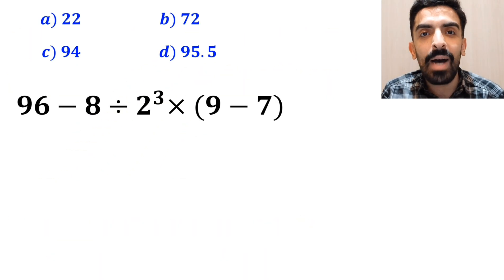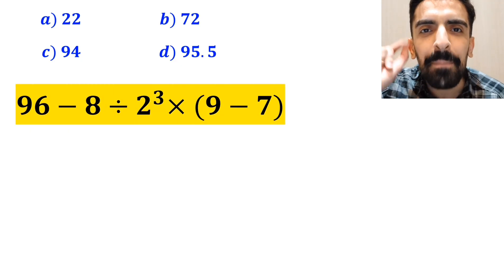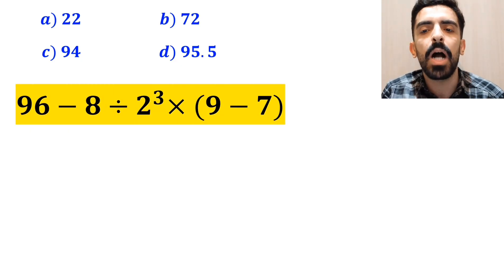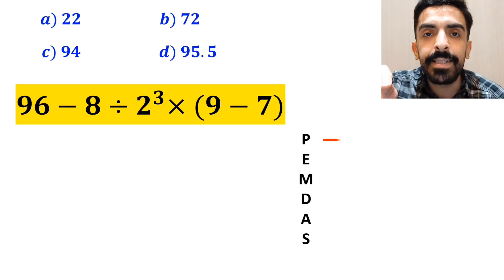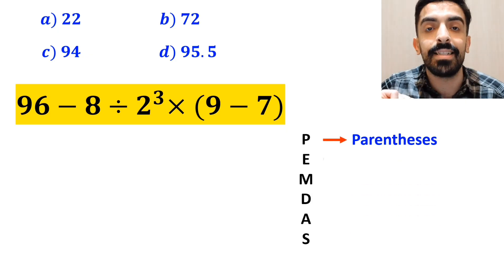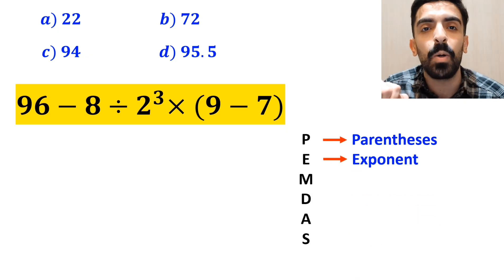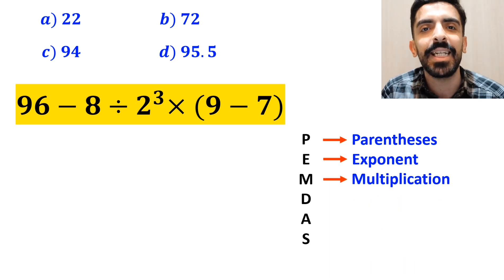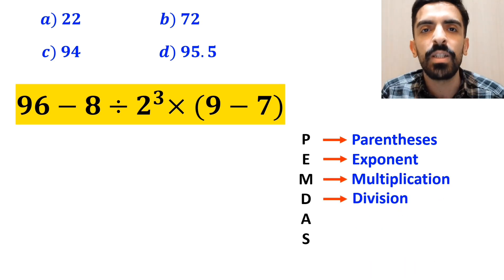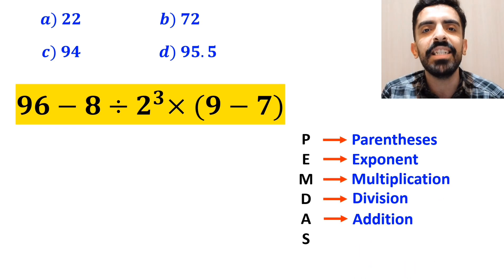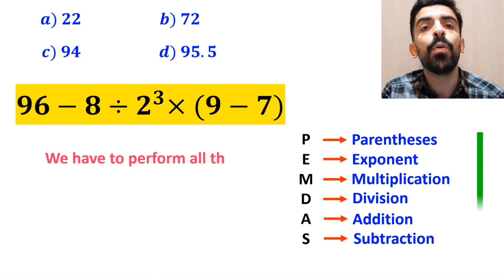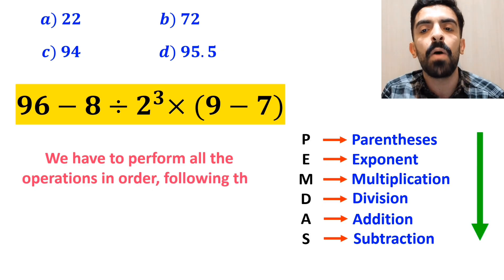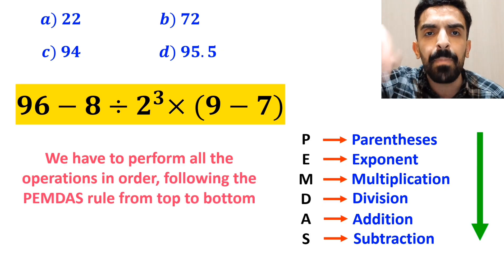Now let me show you how to solve this expression properly. To solve this problem, we must follow the PEMDAS rule step by step. In this rule, P stands for parentheses, E stands for exponents, M stands for multiplication, D stands for division, A stands for addition, and S stands for subtraction. It means that we have to perform all the operations in order following the PEMDAS rule from top to bottom.